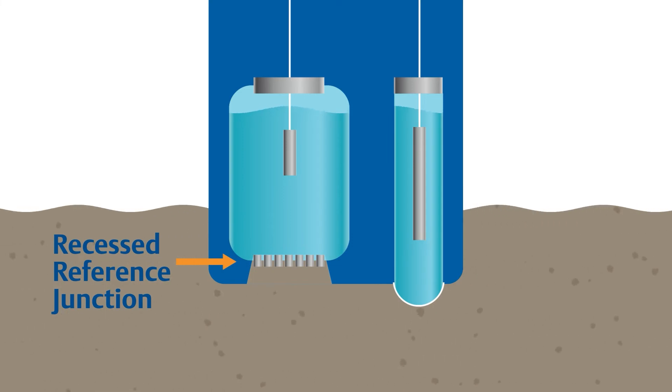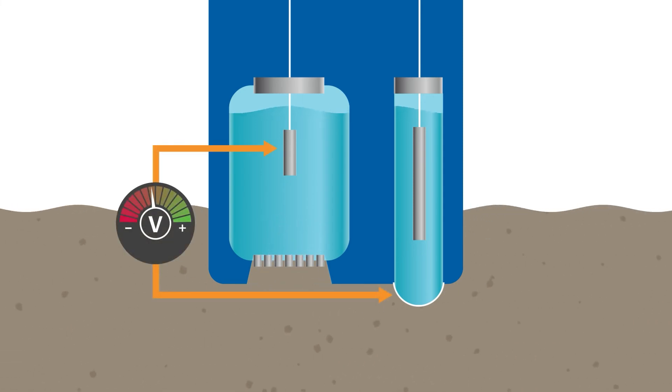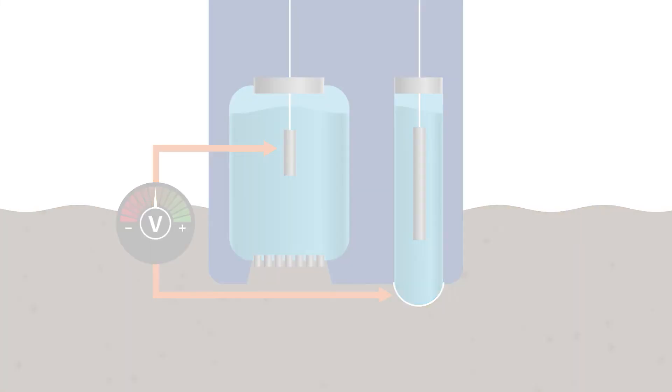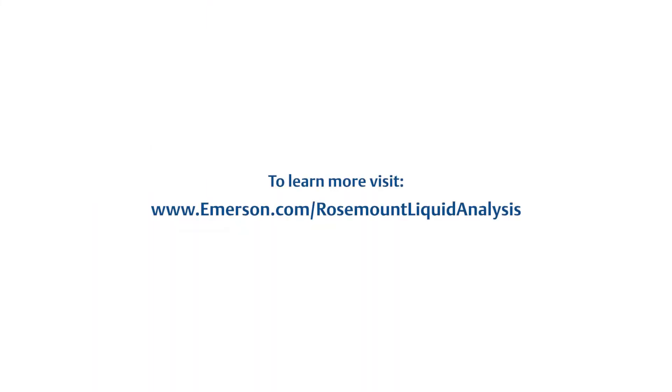The result is a longer-lasting, more reliable pH measurement. To learn more about how Emerson's pH sensors can overcome pH measurement challenges in dirty water applications, visit www.emerson.com/rosemountliquidanalysis.